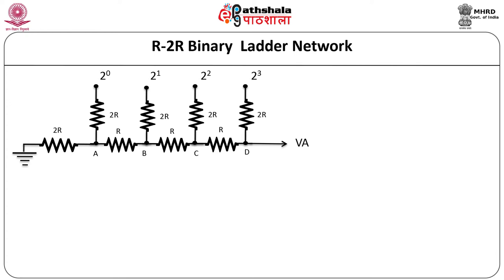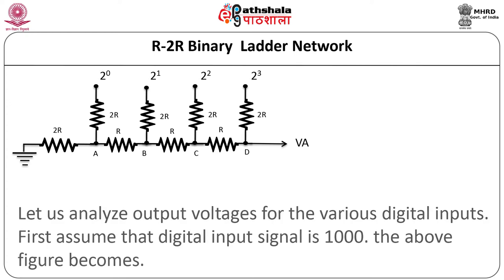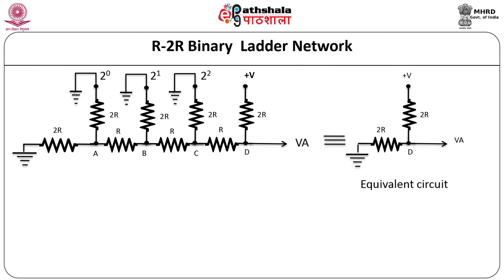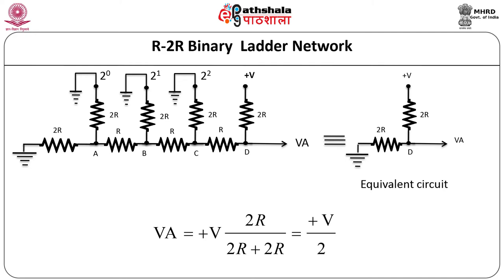For a 4-bit R2R DAC, the network requires 8 resistors — 5 having value 2R and 3 having value R. To analyze the R2R network, let us assume digital input is 1000, where MSB is 1 and all other bits are 0. From the equivalent circuit, using a potential divider arrangement with voltage source +V at point D, the analog output voltage VA comes out to be +V/2. Thus the contribution of the MSB bit is +V/2.